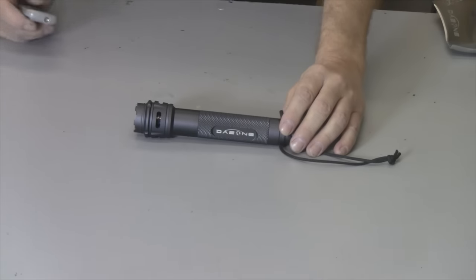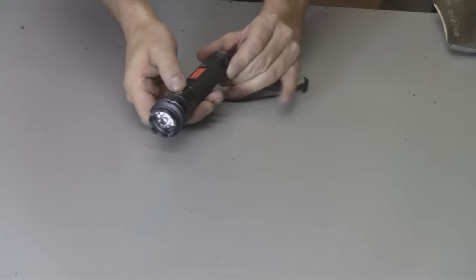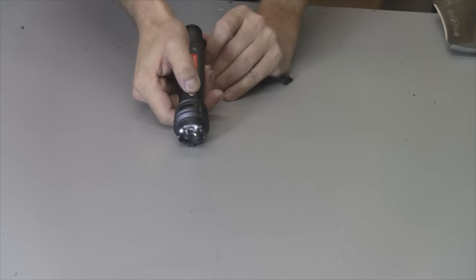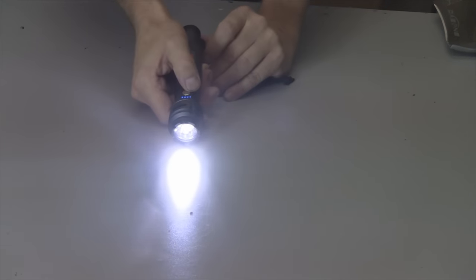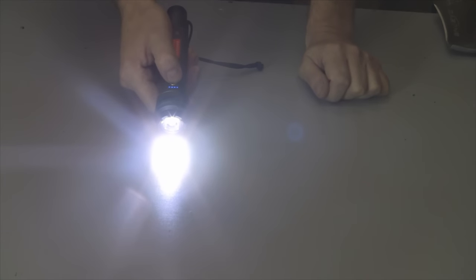Flashlight is fully charged so I'll show you the different modes. Here is the on and off button right here, just hold it in. This first mode is the dimmest mode, and we have the next mode which is brighter, actually the brightest. And the next mode is a strobe.